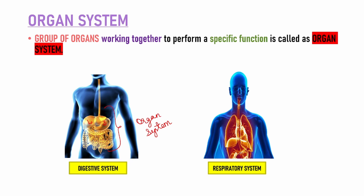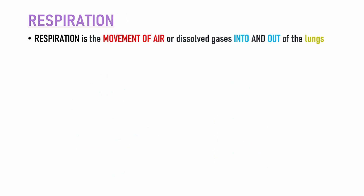This chapter mein hum seekhenge about the respiratory system and circulatory system. So let's begin — what do you mean by respiration? Respiration is the movement of air — humari body ke andar air jayega, then body ke bahar air aayega. That is called respiration. So the movement of air or dissolved gases into and out of the lungs is called respiration.